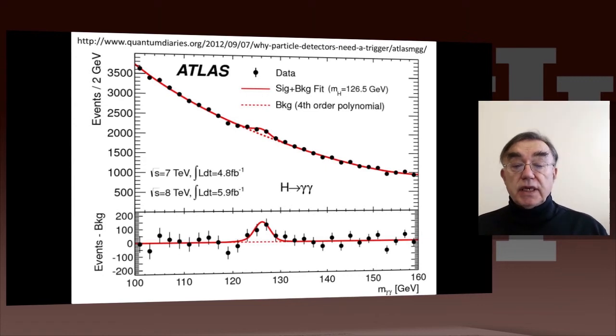You see an excess of events at around 126 GeV. Remember, protons are 0.98 GeV, so this is much heavier than the proton. That's why these protons have to be such high energy. You're not gonna produce a Higgs from two protons colliding unless you have a lot of energy, which you can convert back into mass.